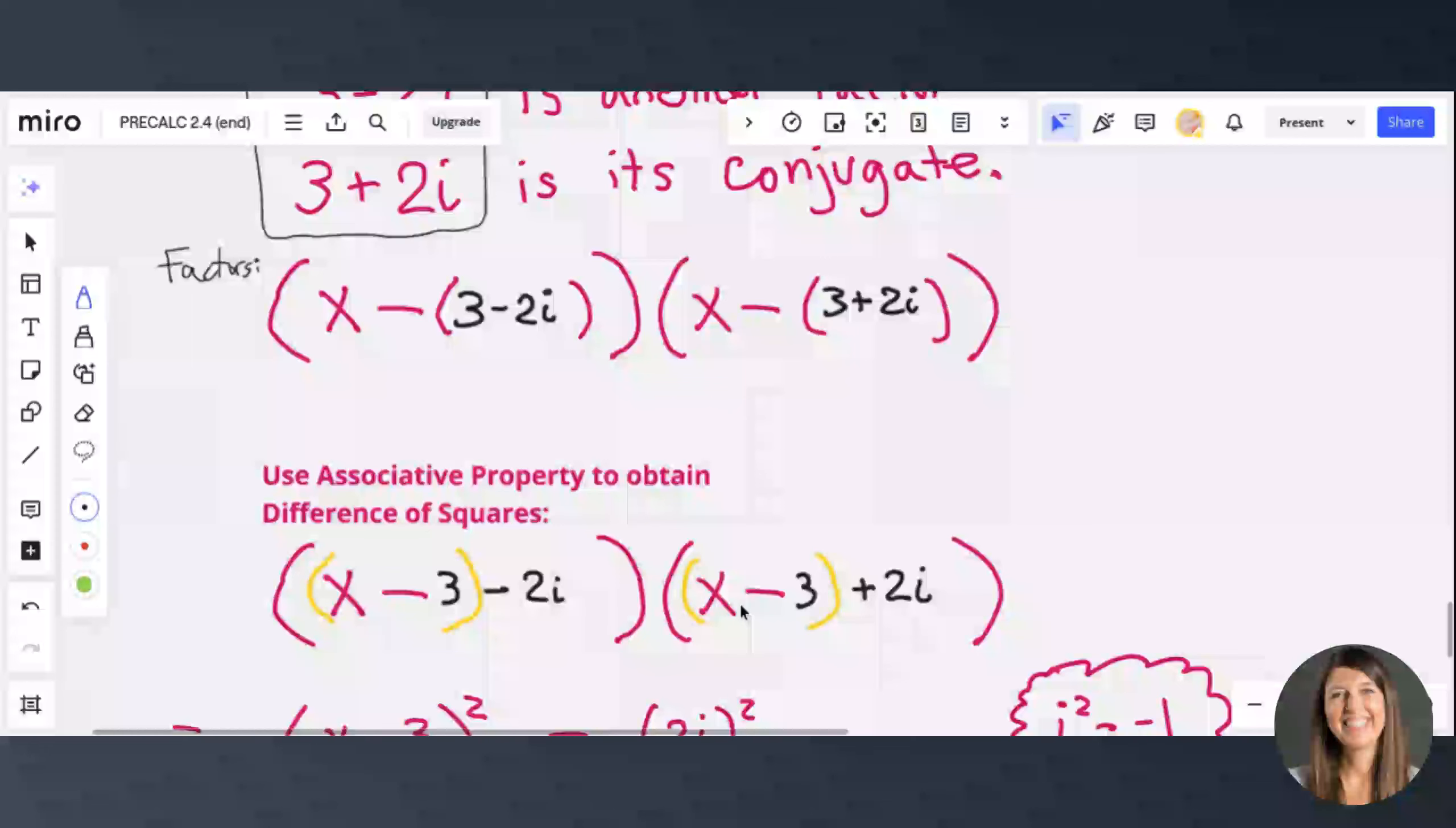So now I've got my a minus b, and then a plus b over here. So what is a? a is the x minus 3 in the yellow parentheses, and b is the 2i. So now I can say a squared minus b squared is x minus 3 squared minus 2i squared.